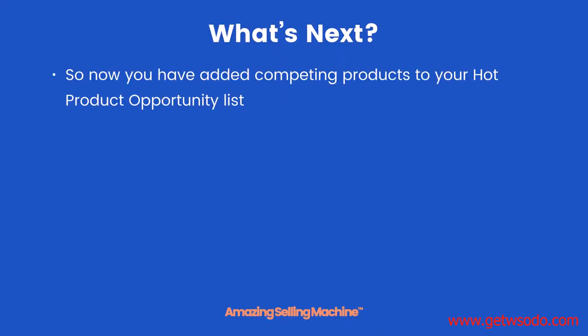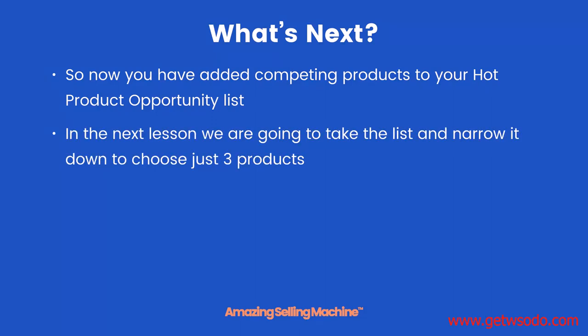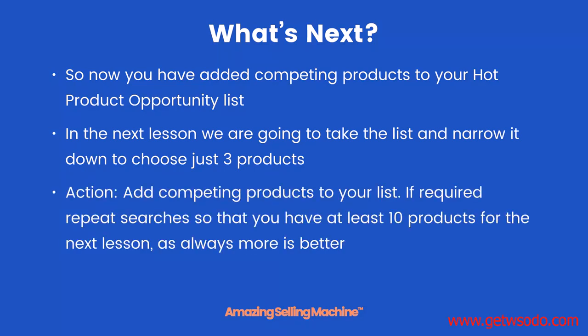Now you've added competing products to your hot product opportunity list. In the next lesson we're going to take the list and narrow it down to choose just three products. Your action step: add competing products to your list, and if required repeat searches so that you have at least 10 products for the next lesson. As always, more is better — the more products you have to compare, the better choices you're going to have available to you.